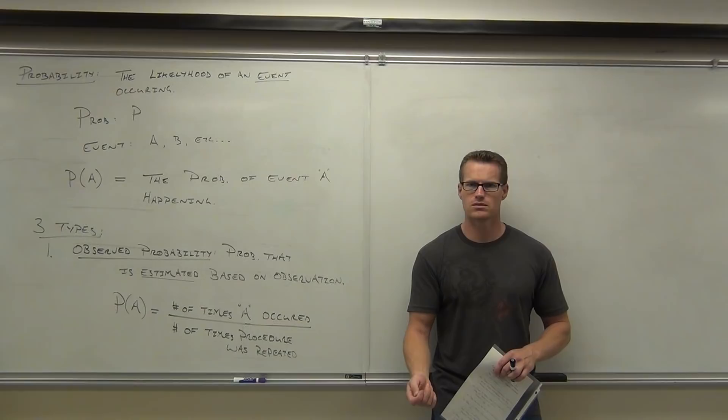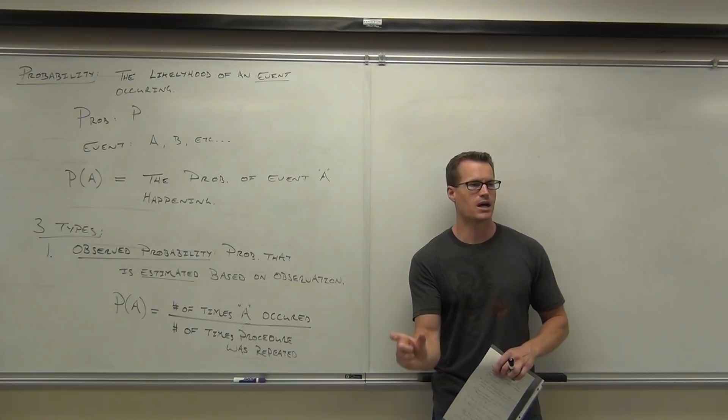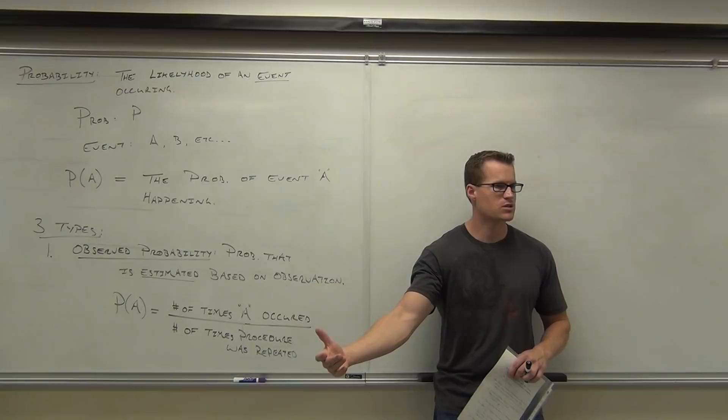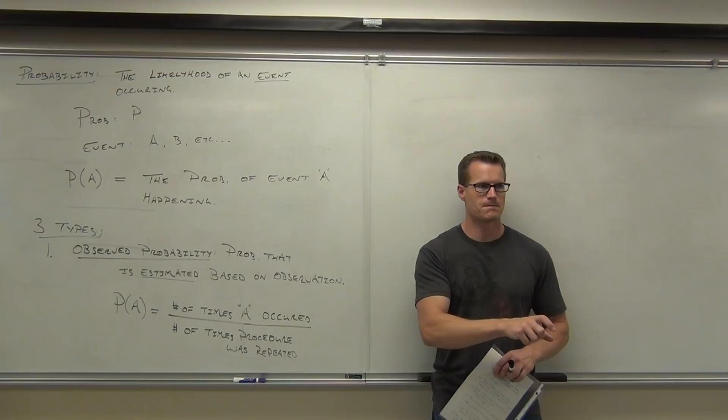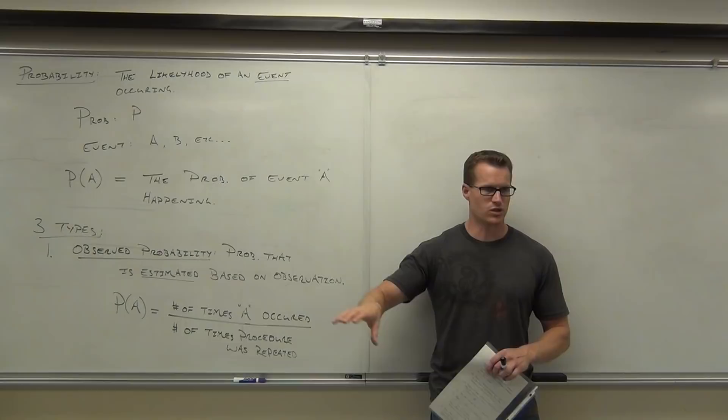So it's what someone has actually done, and then you take that and estimate it and apply it toward their future. If you hit the ball eight times out of every 24, chances are you're going to continue that statistic. So when you come up to bat next, you have a one-third chance of hitting the ball. That's how you use observed probability.